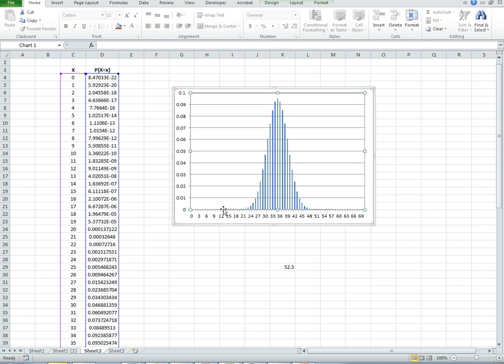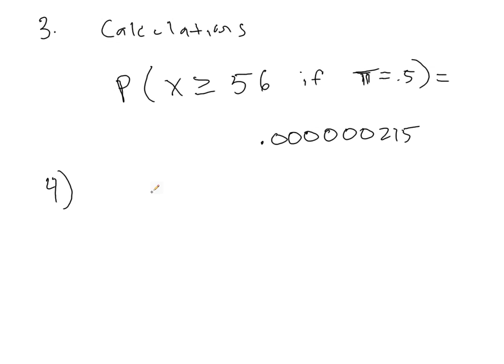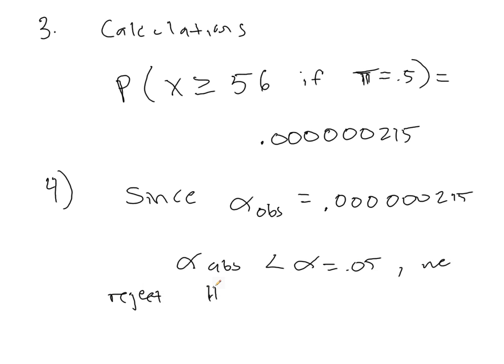that is very far outside of the general distribution of the probability. So we have a very, very highly unlikely occurrence just by chance. So since the alpha observed, which is equal to .000000215, since that is less than the alpha value, which is .05, we reject H0.